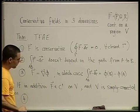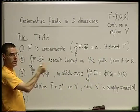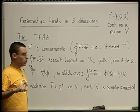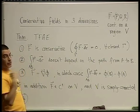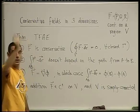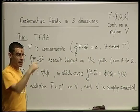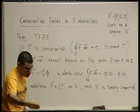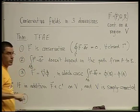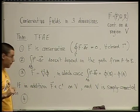Simply connected means that for any path you take, you can find a surface for which that path is a boundary. For example, on a torus, if you take a curve going around it, there is no such surface. But for an avocado-shaped region without the center, even a curve going around the center still bounds some surface. If you need to refresh your memory, go watch the clip on simply connected domains.